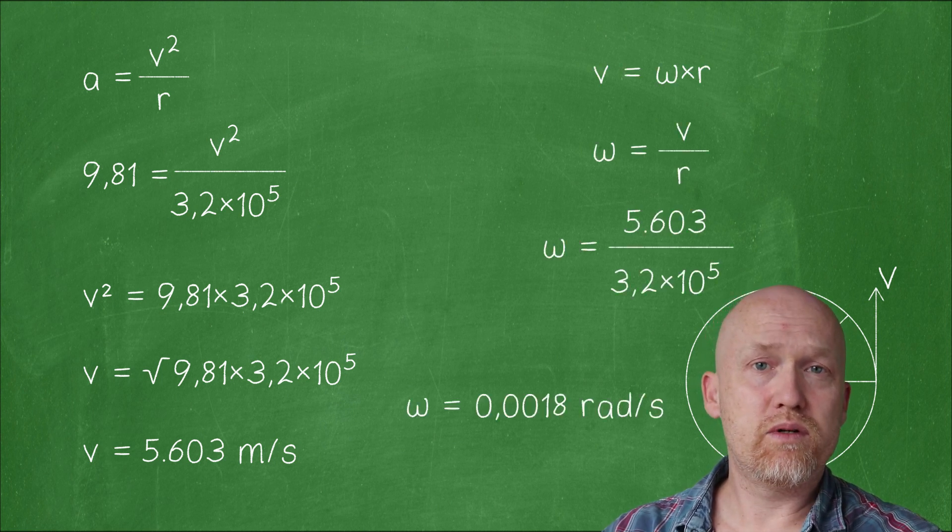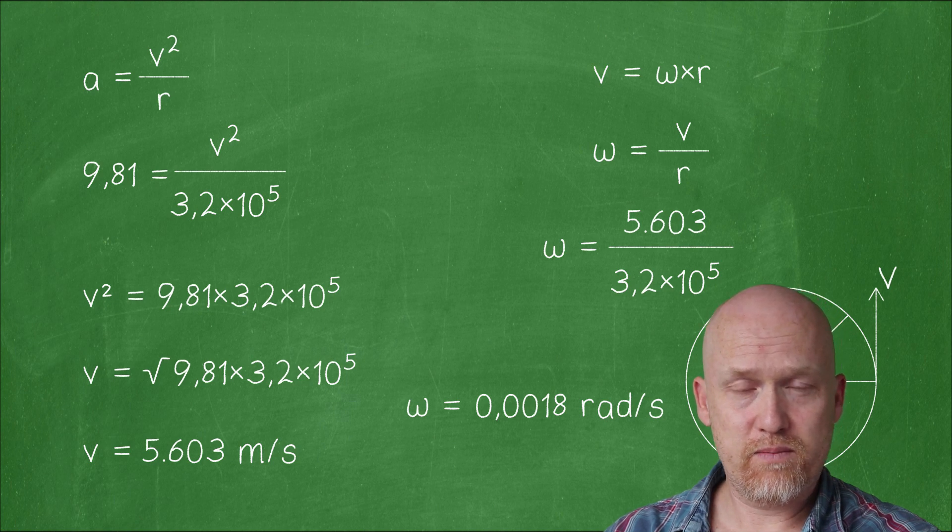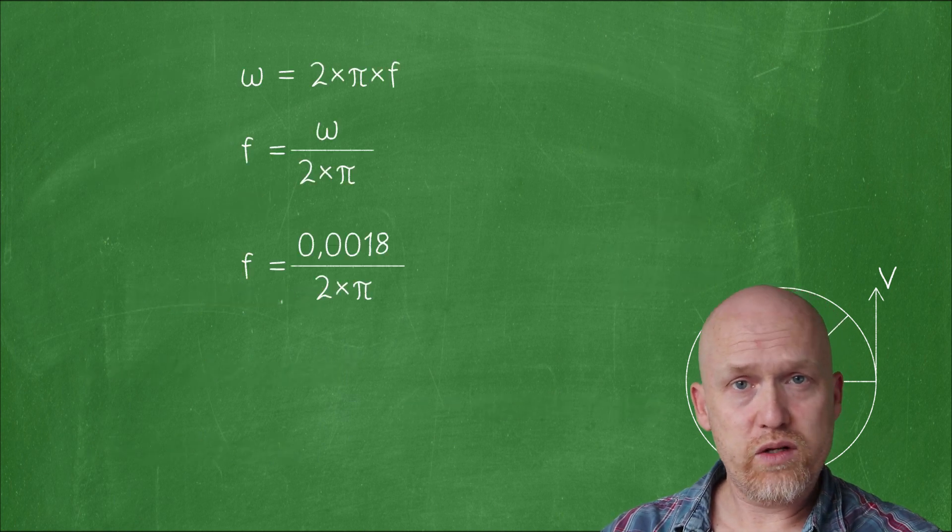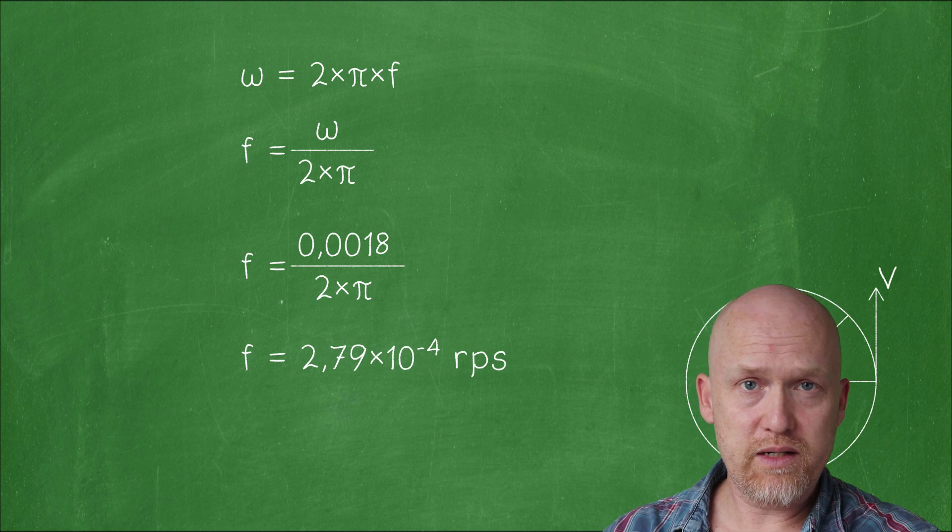This means that the angular velocity needs to be 0.0018 radians per second. This translates to a frequency of 2.79 times 10 to the power of negative 4.